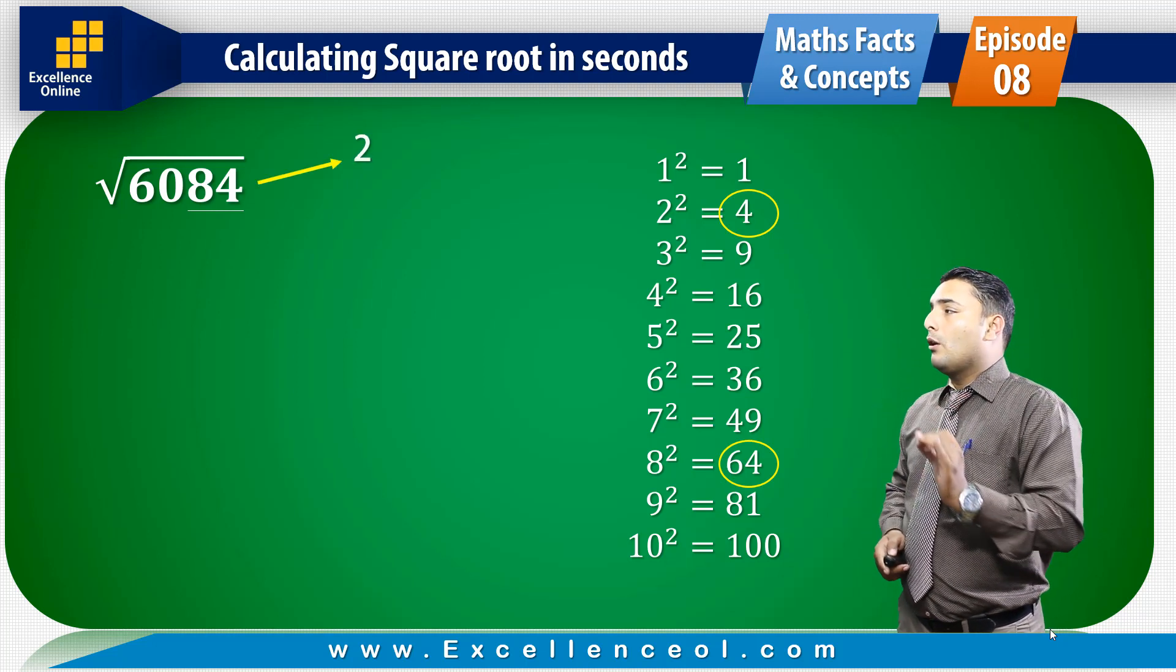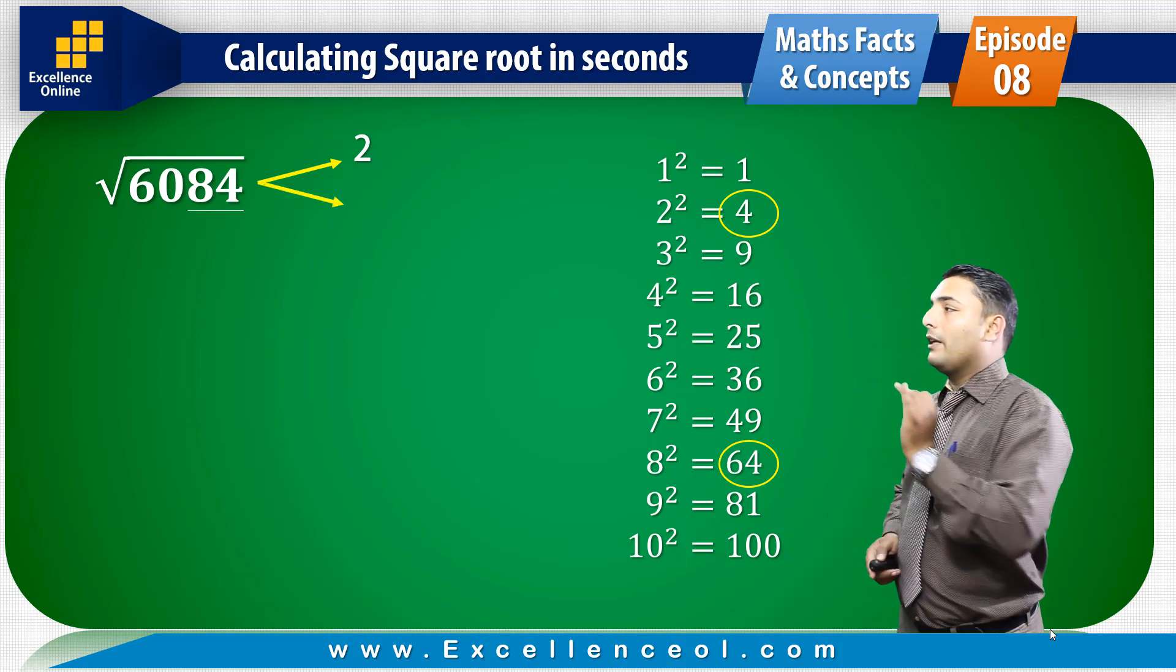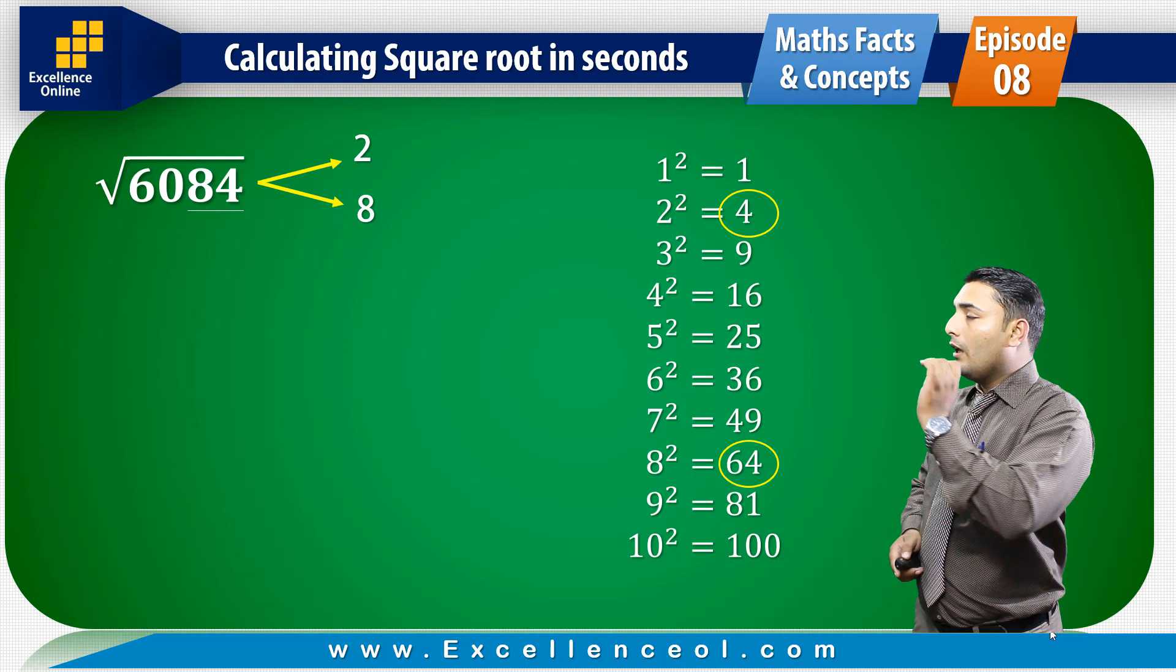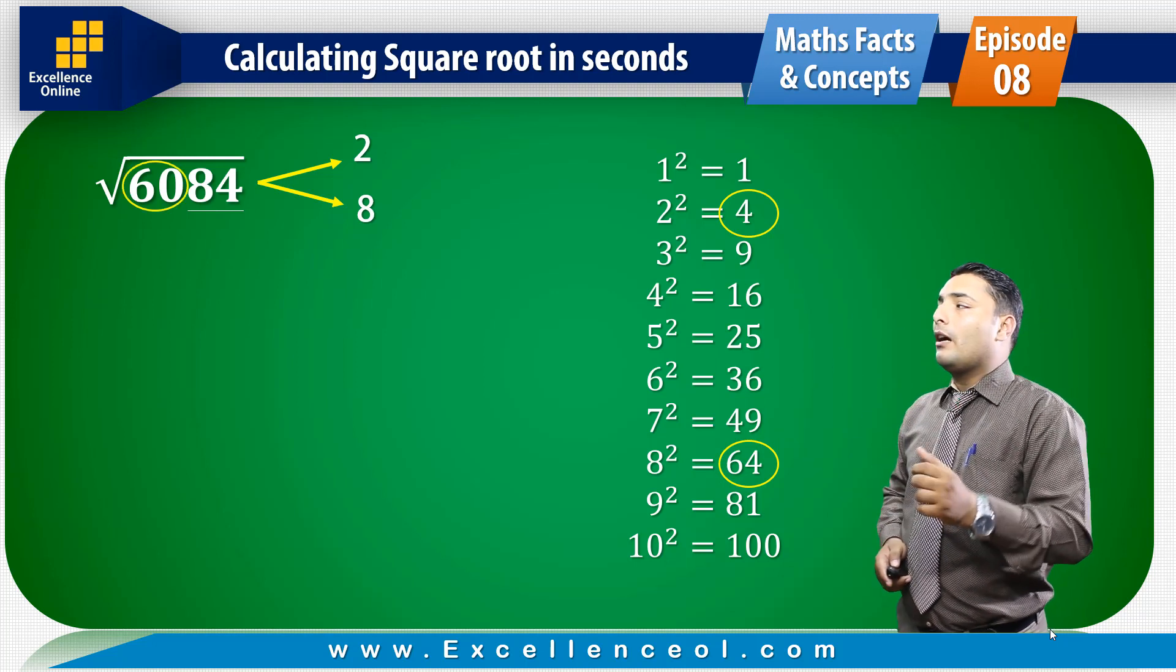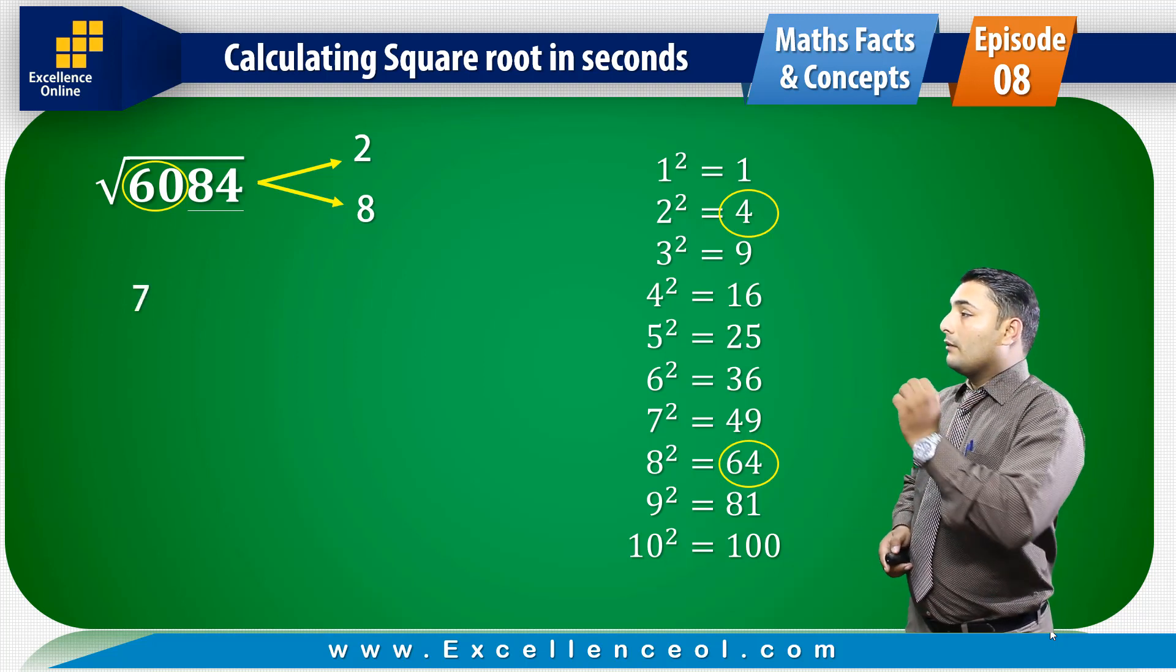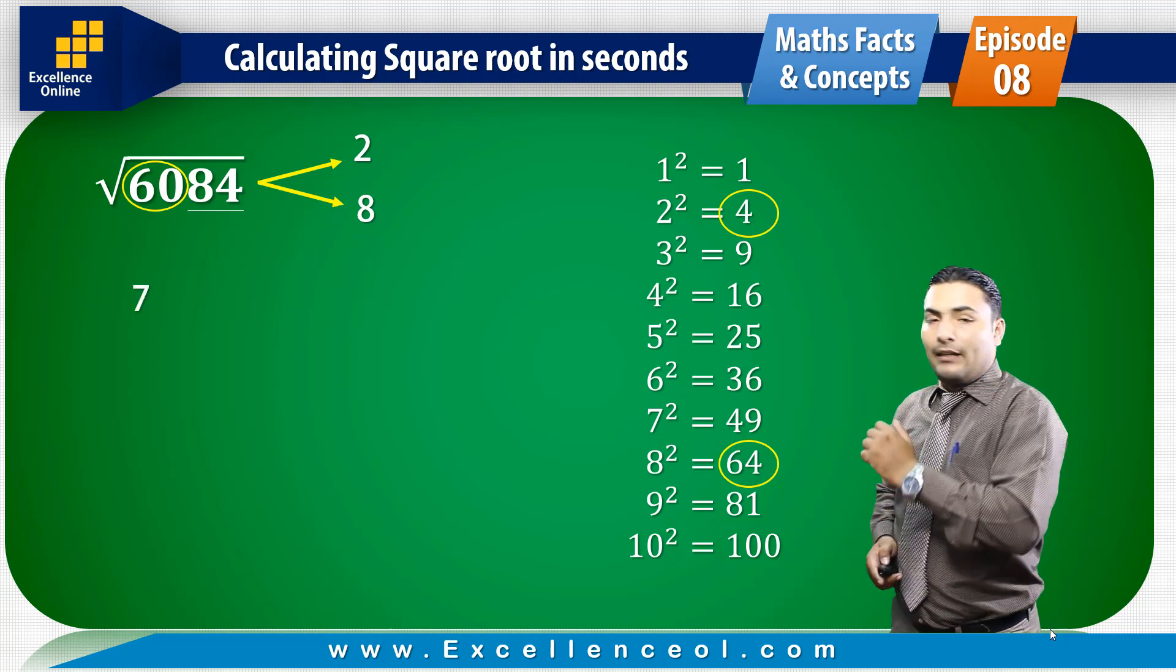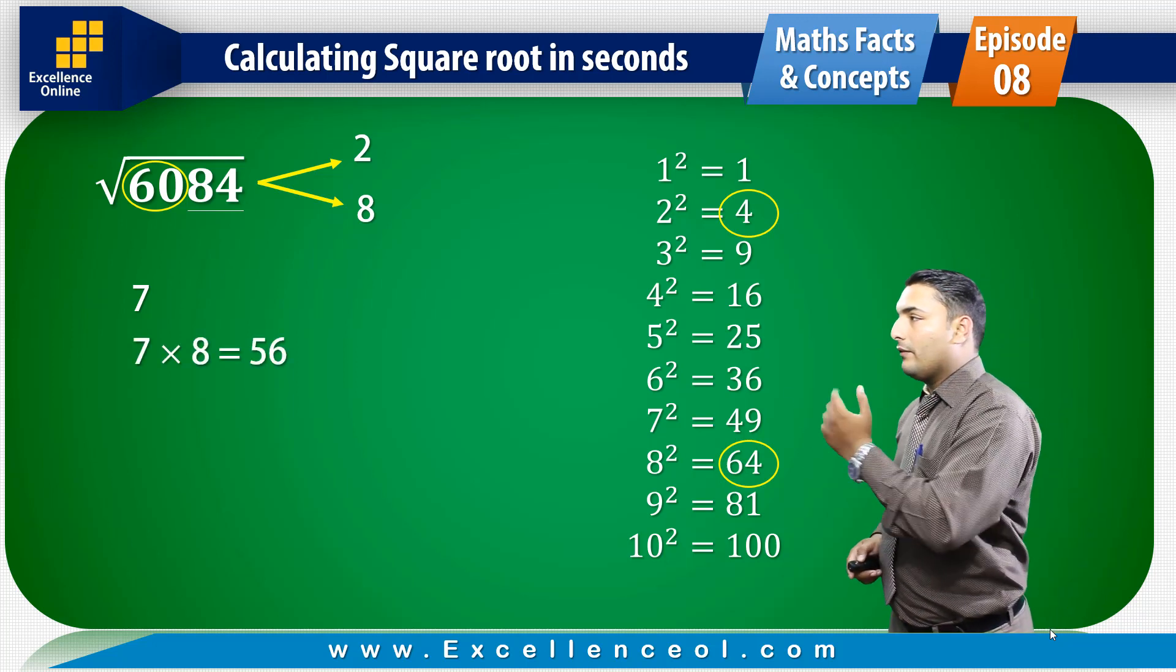4 could be from 2 squared or 8 squared. Then, the remaining number is 60. We have to see which perfect square is close to 60. The perfect square smaller than 60 is 49. So 49 square root is 7. We have 7 multiplied by 8, which gives 56.